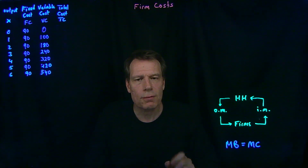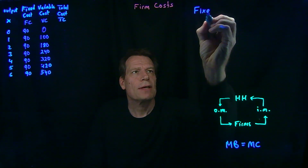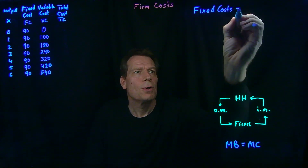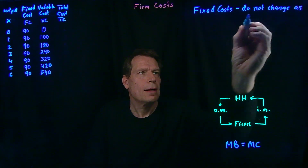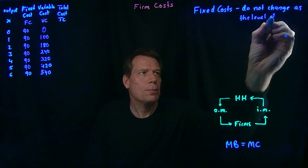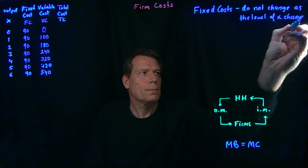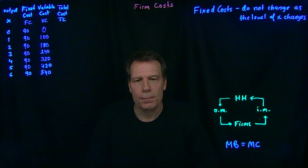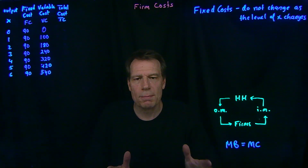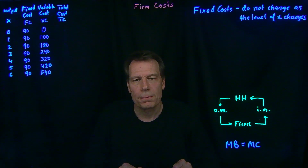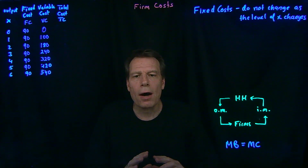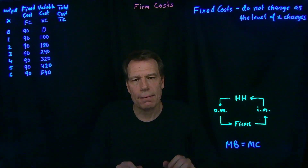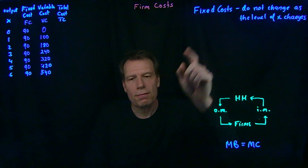We'll distinguish between two types of costs. The first are fixed costs. Fixed costs do not change — they're fixed as the level of output x changes. Think about, for example, opening a restaurant. You've just signed a lease agreement for the coming year for the space the restaurant is going to occupy. You're going to owe that lease payment no matter what. Even if you don't ever serve a single meal in that space, you're going to owe that lease. And no matter how busy the restaurant gets, that lease payment is going to be exactly the same. So that would be an example of a fixed cost over the coming year.